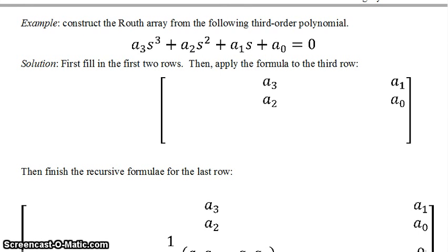To construct the Routh Array, the first thing we do is fill in the first two rows: A3, A2, A1, A0. So the first two rows are filled in, and then we apply our formula to the third row.